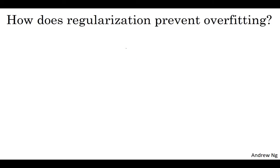Here's another attempt at additional intuition for why regularization helps prevent overfitting. And for this, I'm going to assume that we're using the tanh activation function which looks like this. So this is g of z equals tanh of z. So if that's the case, notice that so long as z is quite small, so if z takes on only a smallish range of parameters, maybe around here, then you're just using the linear regime of the tanh function. It's only if z is allowed to wander out to larger values or smaller values like so that the activation function starts to become less linear.